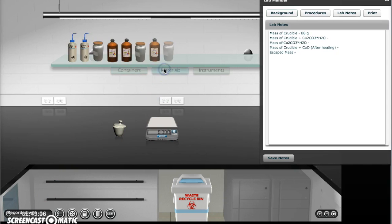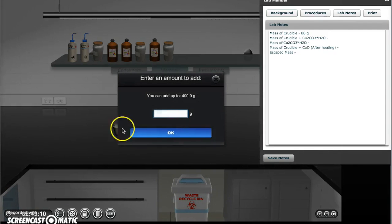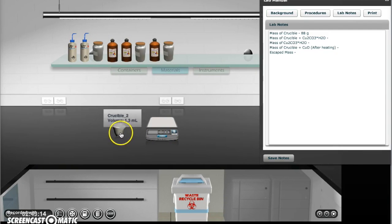Next, go to the materials tab and click and drag the copper II carbonate hydroxide hydrate to the crucible. When prompted, add 5 grams of the hydrate to the crucible, and then put the crucible back onto the scale. Record the crucible's mass again.